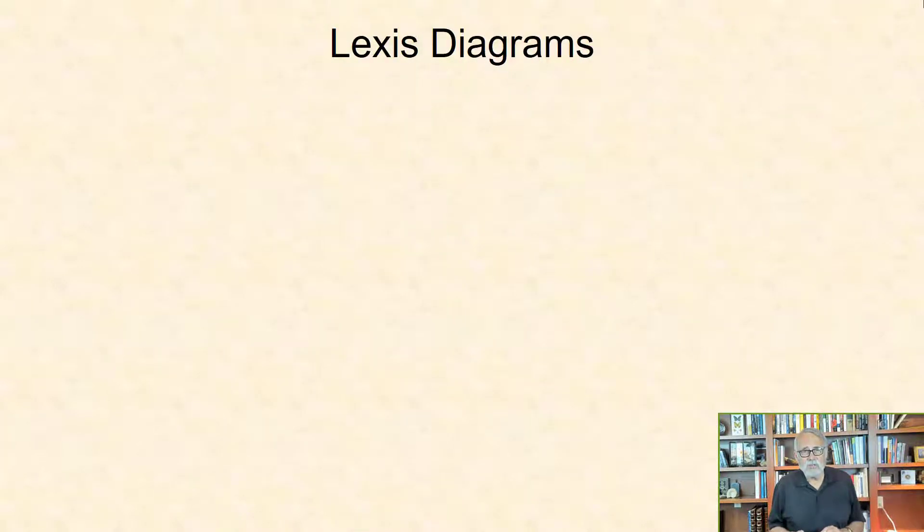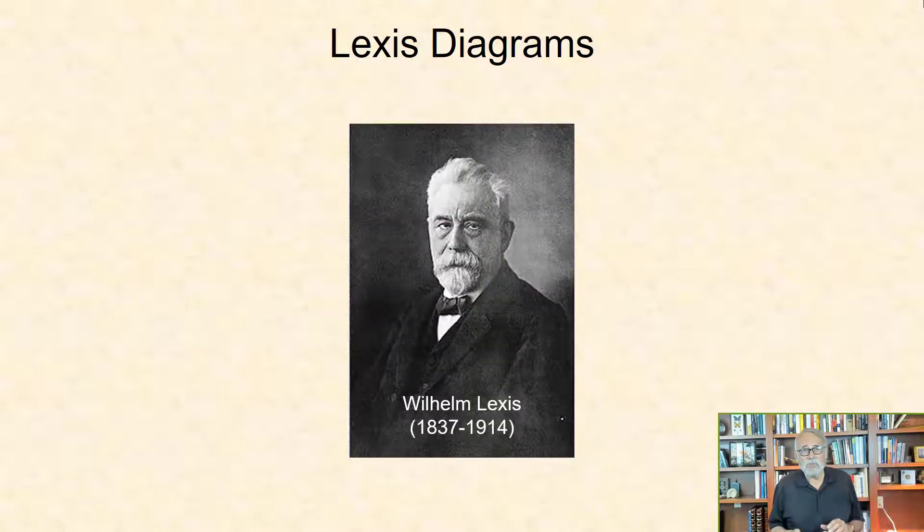Lexis Diagrams are graphical representations of the relationship between demographic events in time and persons at risk. They are named after the German statistician Wilhelm Lexis.